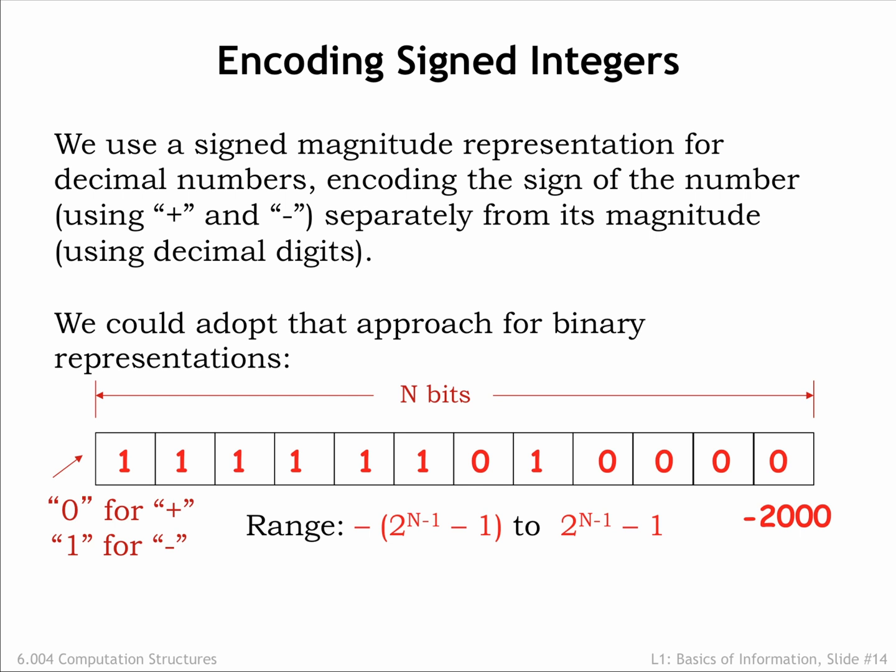So the signed magnitude representation for negative 2000 would be an initial 1 to indicate a negative number, followed by the representation for 2000, as described on the previous two slides.